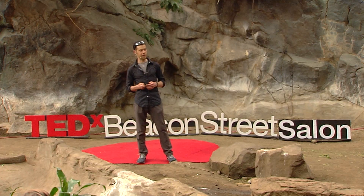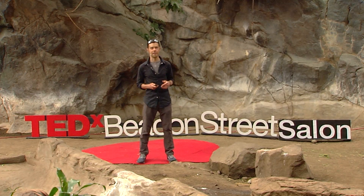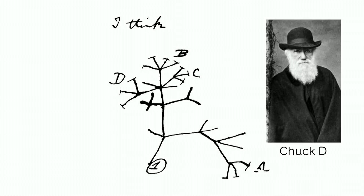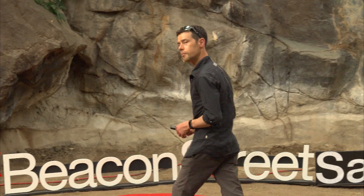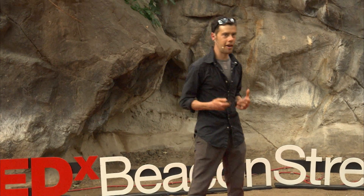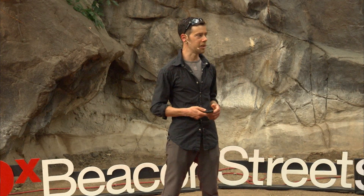So anybody on the screen here — anybody recognize the little tree diagram? Who drew that tree? Does anybody know? Darwin. So the original Chuck D., Charles Darwin, was the person who drew this tree. He was kind of figuring out in his head what trees might look like historically — evolutionary trees — as his ideas were bubbling up.